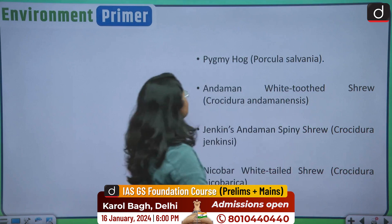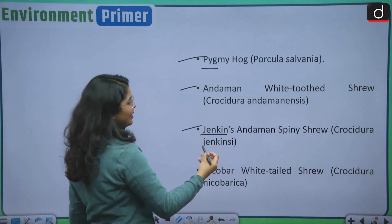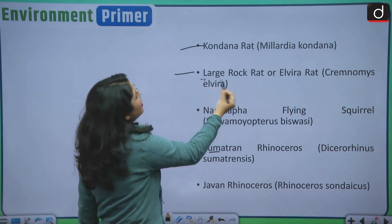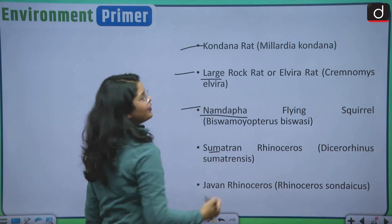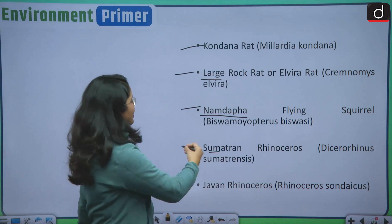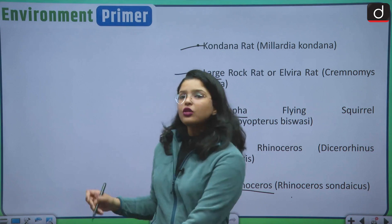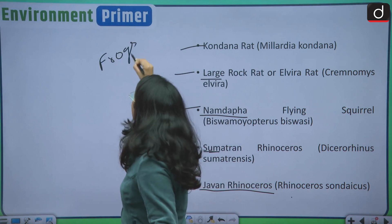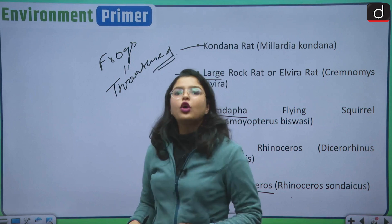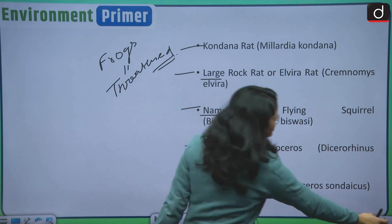Then there are other animals as well such as the Pygmy Hog, Andaman White Toothed Shrew, Jenkins Andaman Spiny Shrew, Nicobar White-tailed Shrew. Moving forward, Kondana Rat, Large Rock Rat or Elvira Rat. Then Namdapha Flying Squirrel. We discussed the Namdapha Flying Squirrel when we were discussing species in Newspartu. Then there is Sumatran Rhinoceros and Javan Rhinoceros. Not only this, various frogs are also threatened in India. Not only the mammals but the amphibians are also on the IUCN red list if you talk about the critically endangered species in India.